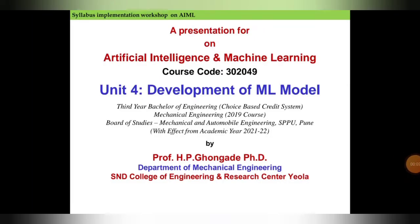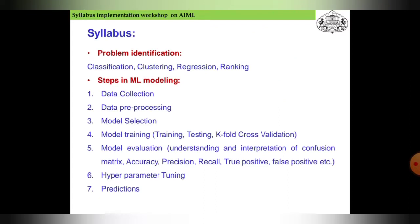Hi there, now we will come to Unit 4, the development of machine learning models. This includes problem identification: classification, clustering, regression, ranking, and the steps involved in machine learning modeling—data collection, data preprocessing, model selection, model training, model evaluation, hyperparameter tuning, and predictions.